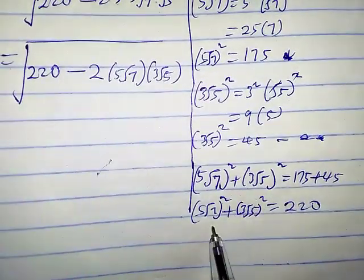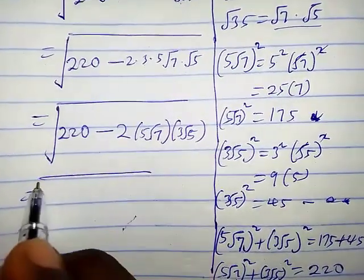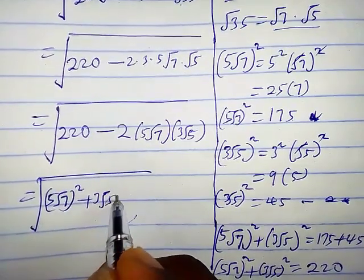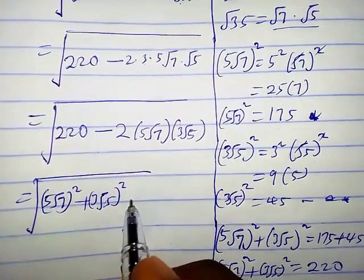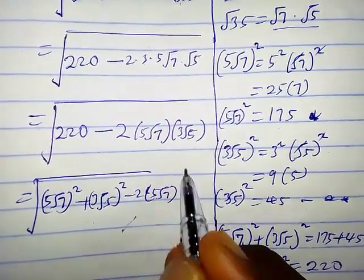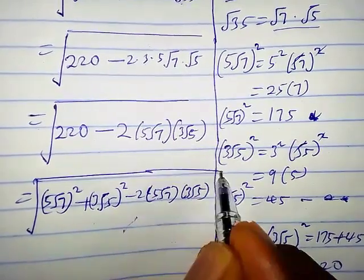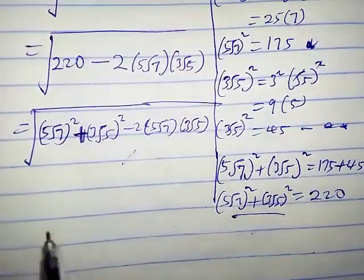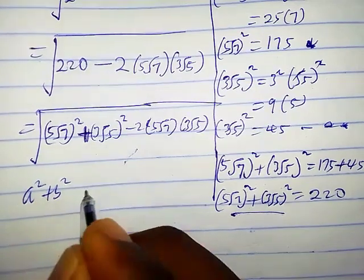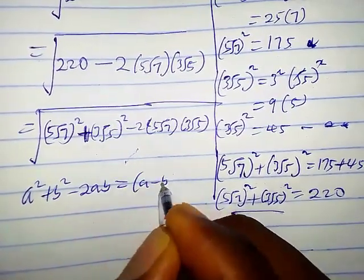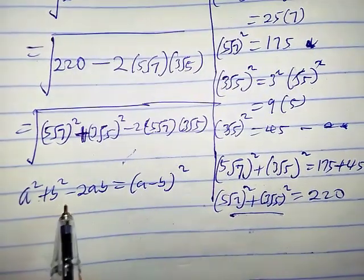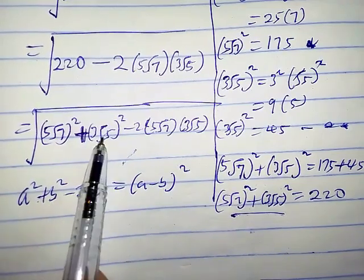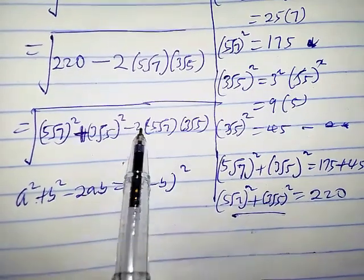We are going to replace 220 with (5√7)² plus (3√5)². So the expression becomes square root of (5√7)² plus (3√5)² minus 2 times 5√7 times 3√5. Notice this matches the algebraic identity a² + b² minus 2ab equals (a minus b)². By comparison, a² is (5√7)² and b² is (3√5)².